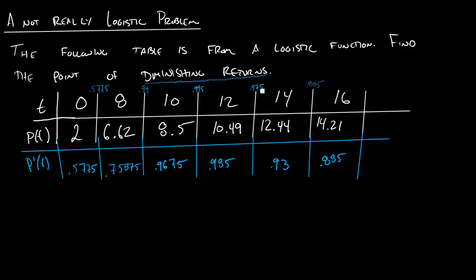Up here, these are the slopes between the points, right? So this .94 is the slope between 8 and 10. And this .75875 down here, that's the average between the two slopes to the side of it. Again, this is how we've been doing it from the beginning. And so if it wants us to find the point of diminishing returns, we're looking for the point at which the derivative is the greatest.